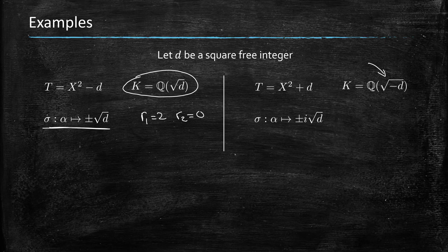And so the two embeddings are given by plus or minus i square root of d. So in this case, the signature is r1 equals 0, because neither of these embeddings is restricted to R, but they're both a pair of conjugate complex embeddings, so r2 equals 1.